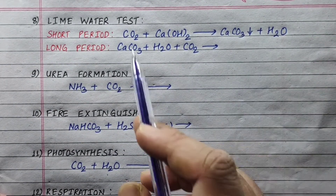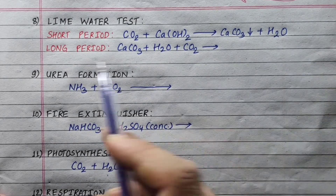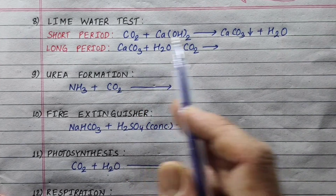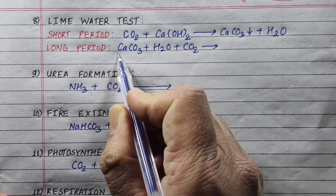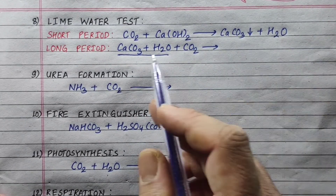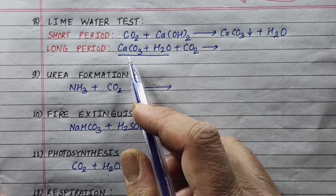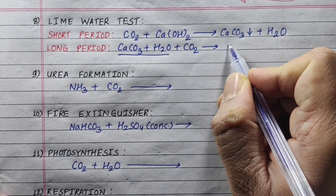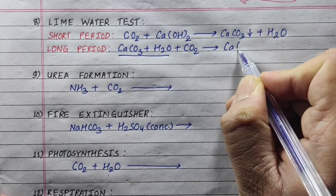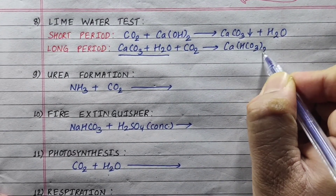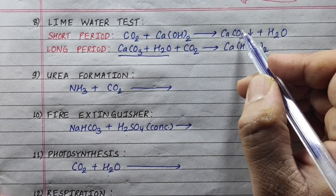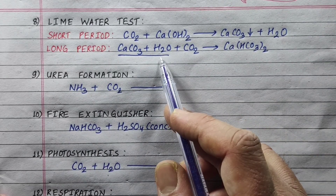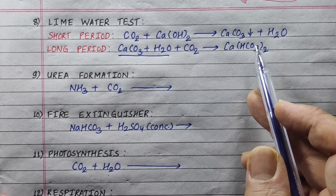If we pass carbon dioxide for a long period, the milkiness will disappear. This happens because excess CO₂ reacts with calcium carbonate to form calcium bicarbonate, which is soluble. So the milkiness disappears when carbon dioxide is passed in excess over a long period.